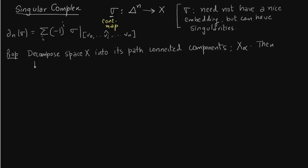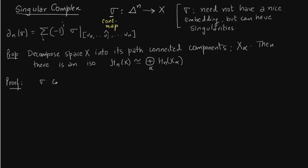You have seen this in multiple examples computed before this lecture — for example, when there were three edges you took Z³ as the basis, and when there were two edges you took Z² as the basis. The same is true when there is an action of a continuous map. In essence, nothing has changed in how you compute it. The proof is simply that what happened in simplicial homology also happens in singular homology because the map sigma is continuous.